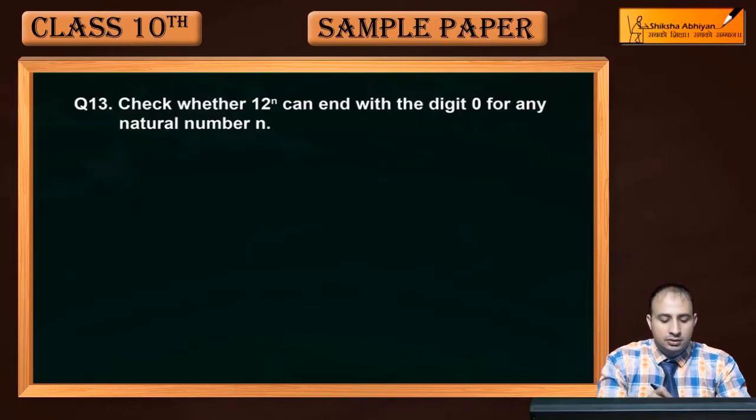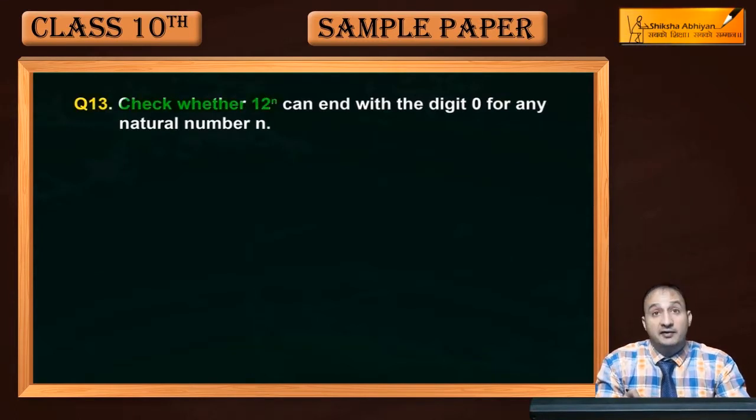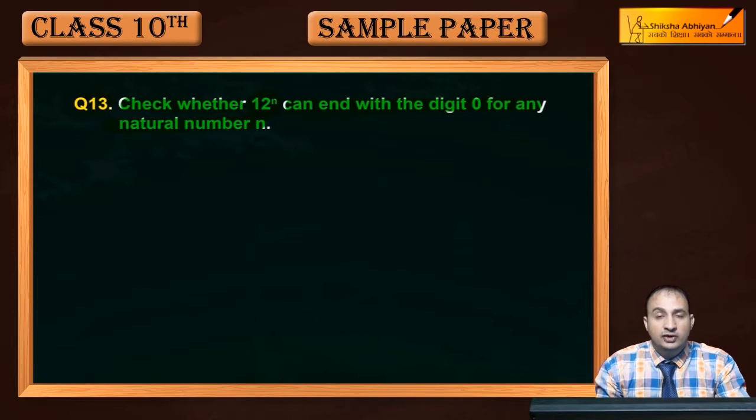Now see question 13. The question is: check whether 12 to the power n can end with the digit 0 for any natural number n. That is, if there is any natural number such that 12 to the power n can end with the last digit being 0.